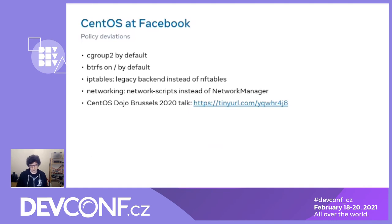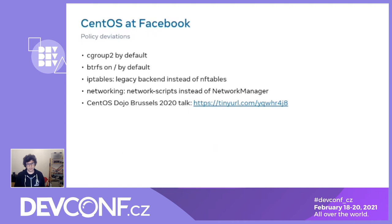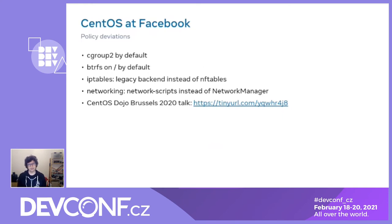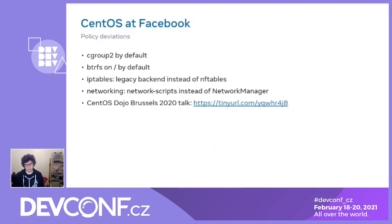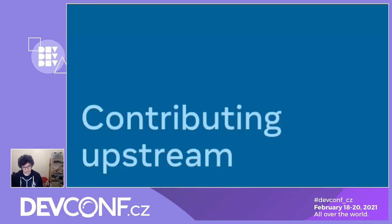We also have a few other minor infrastructure changes. CentOS 8 ships iptables without the legacy backend — only nftables — but our kernel folks don't want to support nftables for a number of reasons, so we rebuilt it with the legacy backend enabled. On the networking front, historically we've always used network-scripts instead of NetworkManager — network-scripts is what used to be the default on CentOS 6 and earlier. This is likely something we'll reevaluate when we start working on CentOS 9; we suspect we'll end up using systemd-networkd.